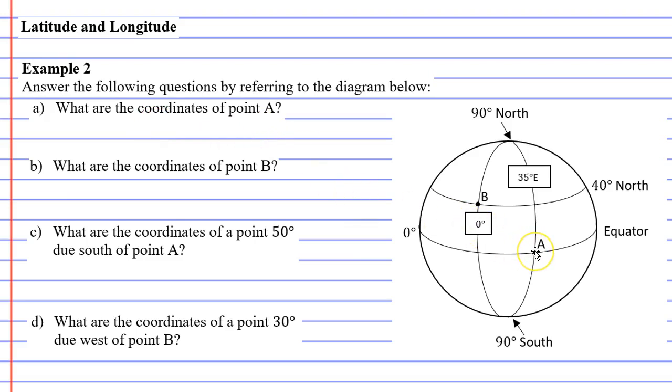Now what you'll notice is a couple of things. Point A lies on the equator, which is 0 degrees. Now, sometimes we get mixed up between what is latitude and what is longitude, so I'm going to give you a little technique that I've heard of.